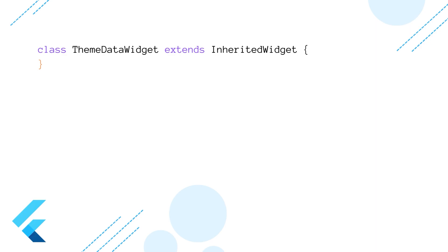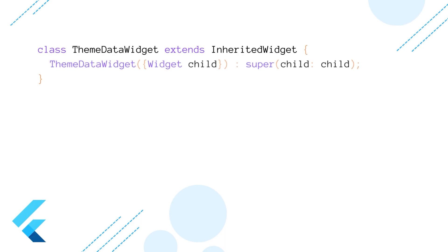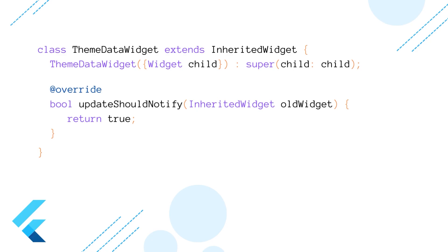Let's see how we can implement this inherited widget. Let's say you have theme data for your application and you want to access it in all widgets down the tree to use the same theme across your application. To achieve this, create a class called ThemeDataWidget and extend it with InheritedWidget. Our inherited widget will hold one parameter — the child — which will be required in the constructor. Now override a method called updateShouldNotify, which will be called every time there is a change in the inherited data.